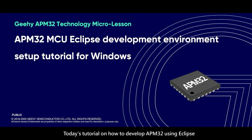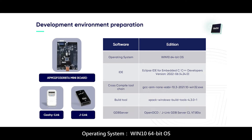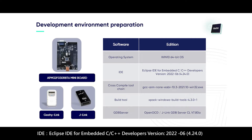Today's tutorial is on how to develop APM32 using Eclipse. Development board: APM32F030R8T6 Mini Board. Debugger: J-Link and J-High Link. Operating system: Windows 10 64-bit. IDE: Eclipse IDE for Embedded C.